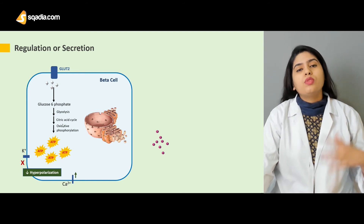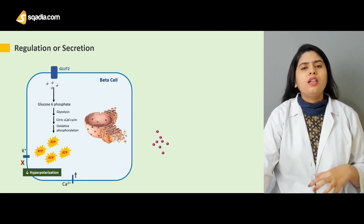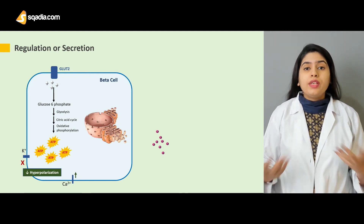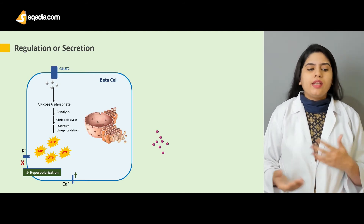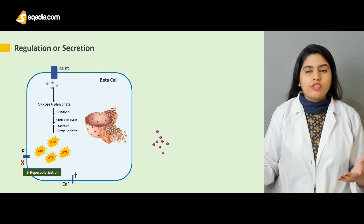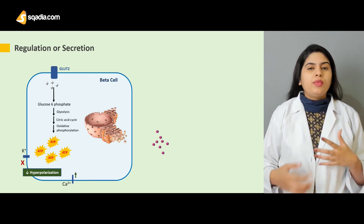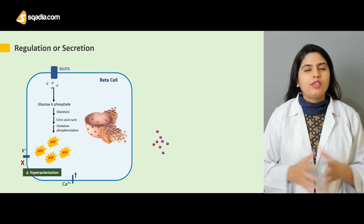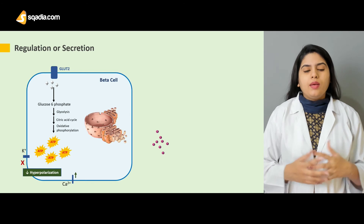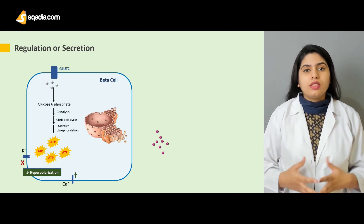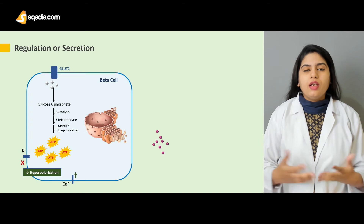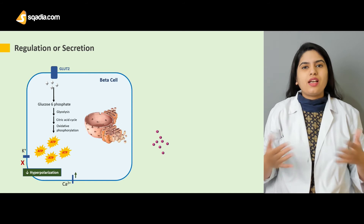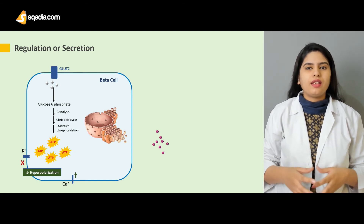When glucose is low, glycolysis, the citric acid cycle, and all related processes will proceed at a low speed. Low energy will be produced, there will be efflux of potassium, hyperpolarization will occur, calcium levels will be decreased in the cell, and insulin will stay in the granules and will not be released. Basically, it is the high calcium level that causes the release of insulin from the granules.